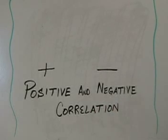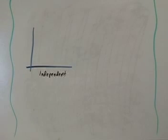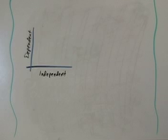Let's talk quickly about positive and negative correlation. Let's start off with a simple graph. Remember that the independent variable always goes along the horizontal axis, and the dependent variable always goes along the vertical axis.